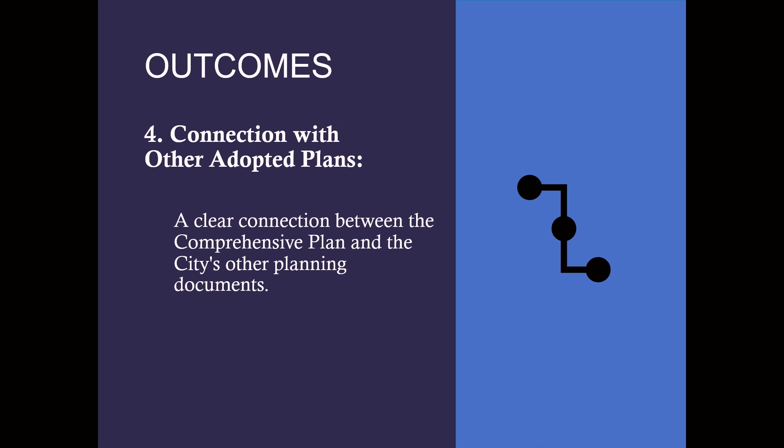The next outcome is a clear connection between the comprehensive plan and the city's other planning documents. The city has many plans — the capital improvement plan, the climate action plan, the strategic plan, the bicycle master plan, and others. The comprehensive plan functions as the overarching policy document, so we want to incorporate and reference these plans as needed within the comprehensive plan document itself.